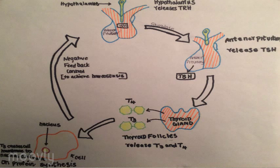T3 and T4 work like steroid hormones and cross the cell membranes, go into the nucleus, and turn on protein synthesis. A negative feedback loop regulates the production of the thyroid hormones.